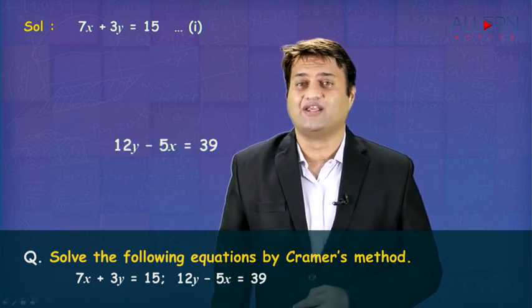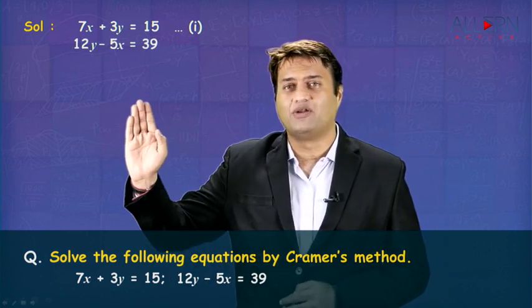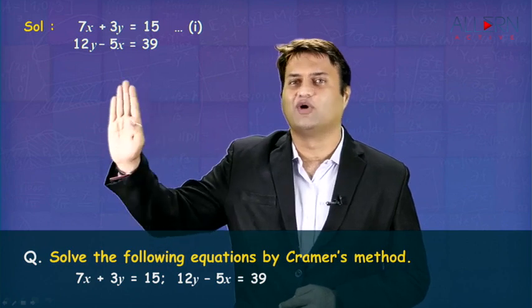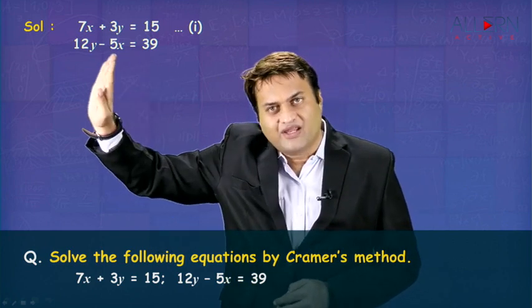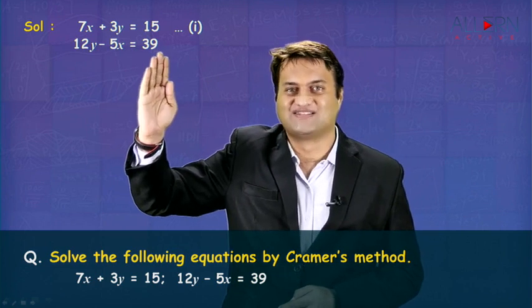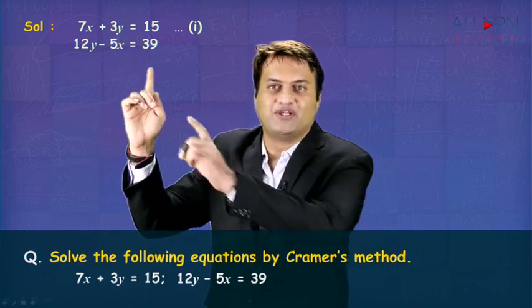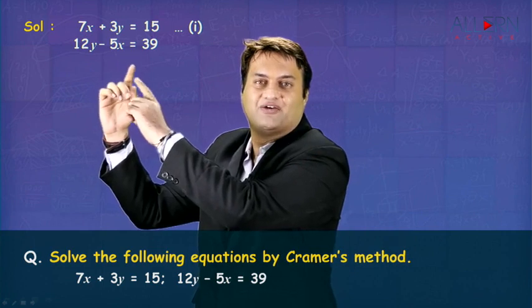Now, look at the second equation. The second equation is 12y minus 5x is equal to 39. Variables are on one side, the constant is on the other side, but the problem is it is not in the alphabetical order. Here there is a y term first and then the x term. So you need to rearrange the left hand side in a way that you get it in the alphabetical order.